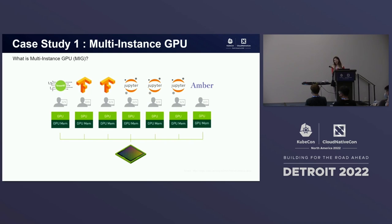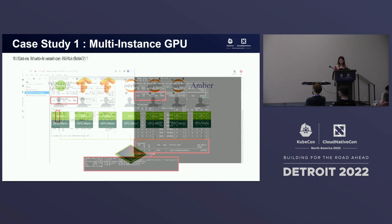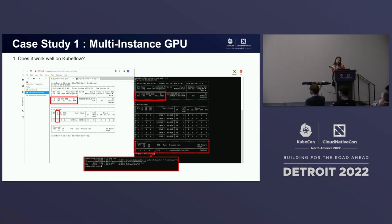I want to list every step on how to set MIG, but let's focus on the lessons that we learned. First, would it work well on Kubeflow? The official document thoroughly explains up to the Kubernetes layer, and the tests on the operating system layer and Kubernetes layer were done without any issue. However, we had to take a step further to check the Kubeflow layer. And to sum up, it works very well as you might have expected.